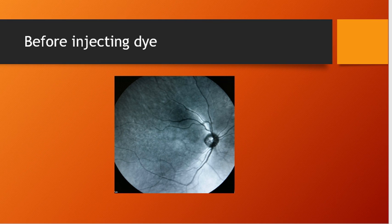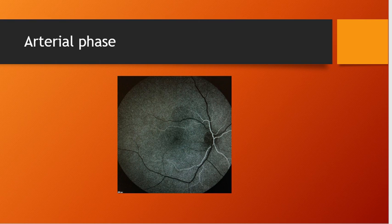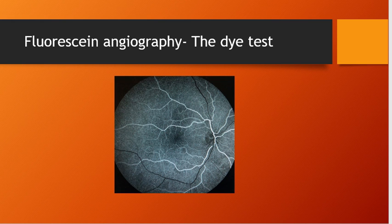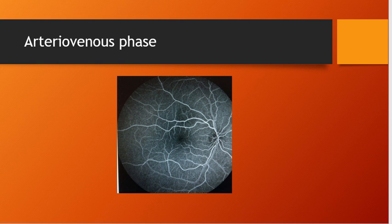Looking at a normal fluorescein angiogram: the first picture shows the fundus image before the dye is injected — blood vessels appear black in this red-free photograph. In the arterial phase, you can see white lines which are the arterioles filled with dye, while the veins, appearing as black lines, are not yet filled. In another arterial phase image, the arterioles are completely filled while the veins are still black, confirming this is the arterial phase.